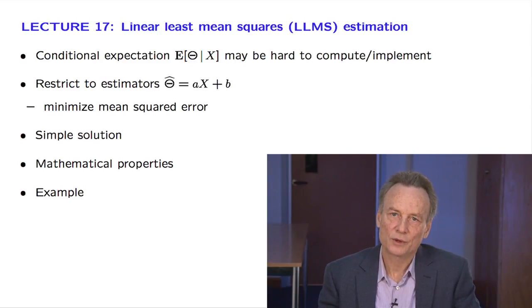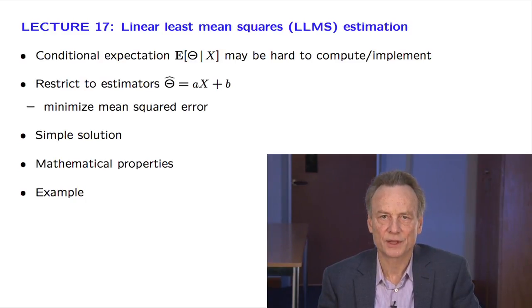For this reason, we may want to consider an estimator that has a simpler structure, an estimator that is a linear function of the data. And then, within this class of estimators, find the one that results in the smallest possible mean squared error.